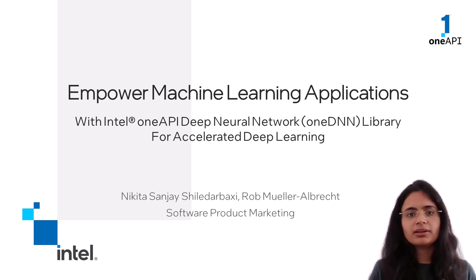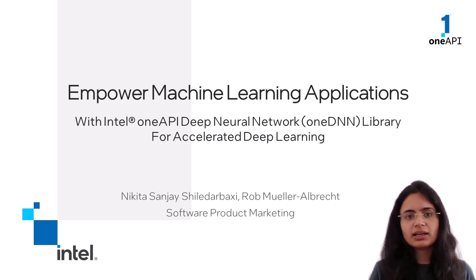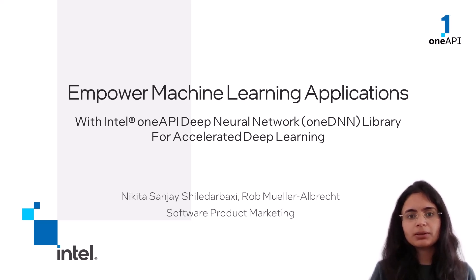The OneDNN project is a part of the UXL foundation and is an implementation of the OneAPI specification for the OneDNN component. The open source functions of the library are building the foundation for many other open, optimized, upstreamed AI libraries and frameworks like PyTorch and TensorFlow.